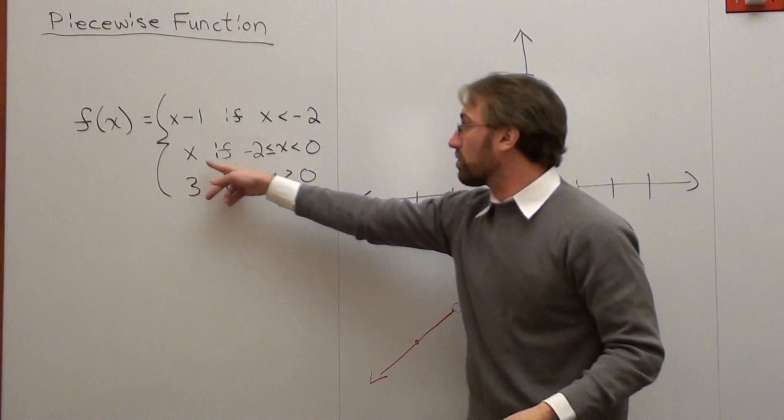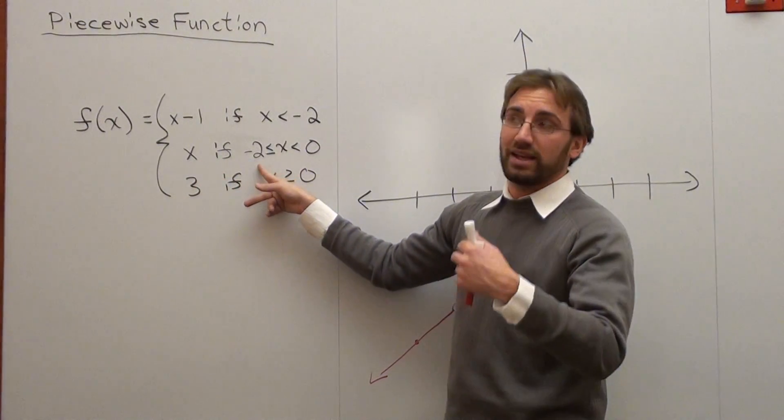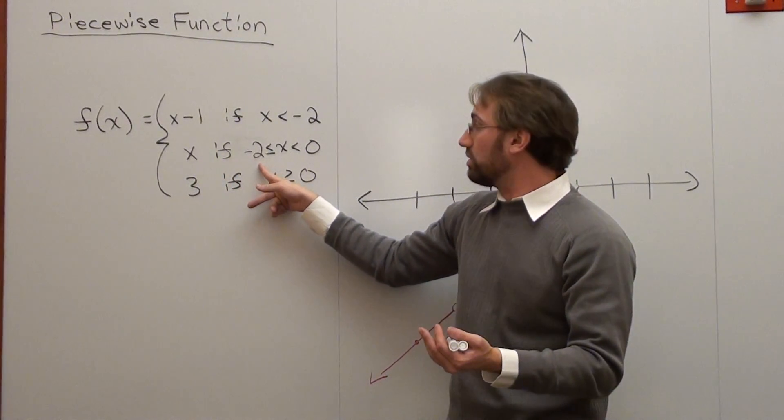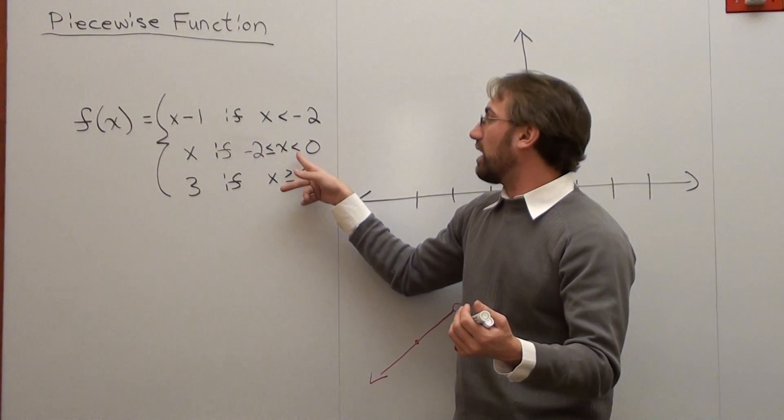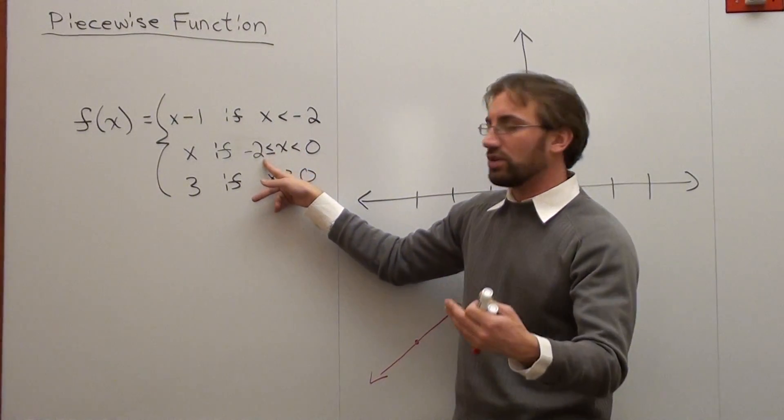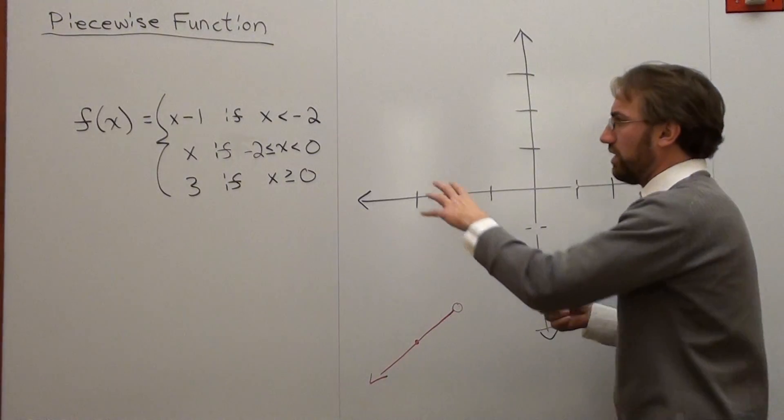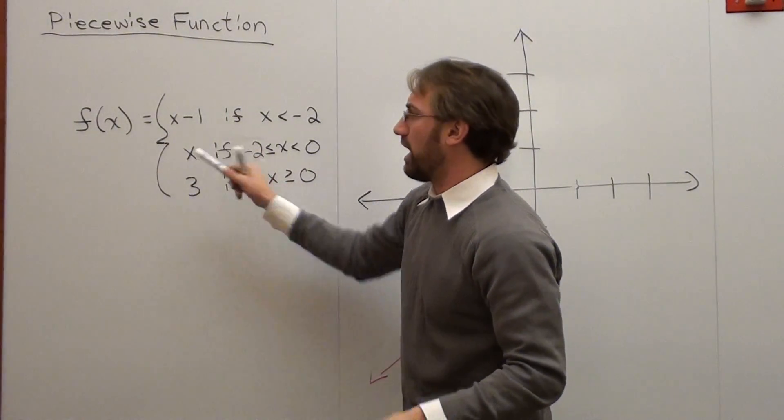So we have to continue. Now the graph is x if x is less than or equal to negative 2, pardon me, excuse me, greater than or equal to negative 2 and less than 0. So now we graph, well, what does this one look like, x?